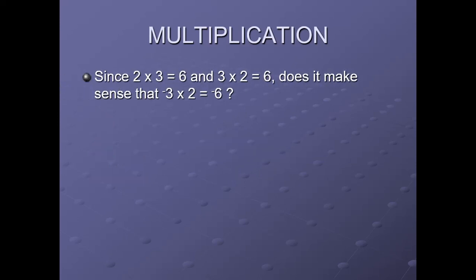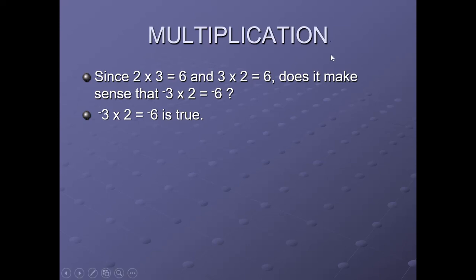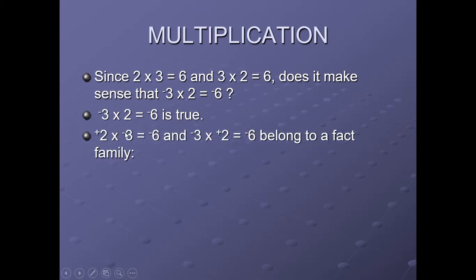Let us understand: 2 × 3 = 6 and 3 × 2 = 6. Does it make sense that minus 3 × 2 is also minus 6? Yes. Minus 3 × 2 is also 2 groups of minus 3, which equals minus 6. This is the commutative property of multiplication.